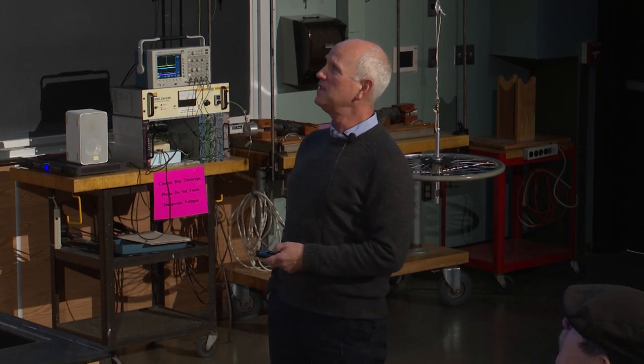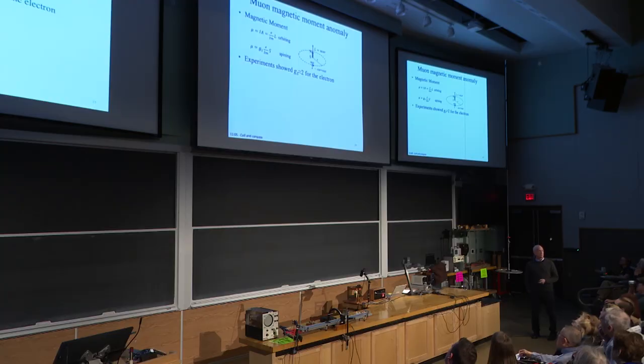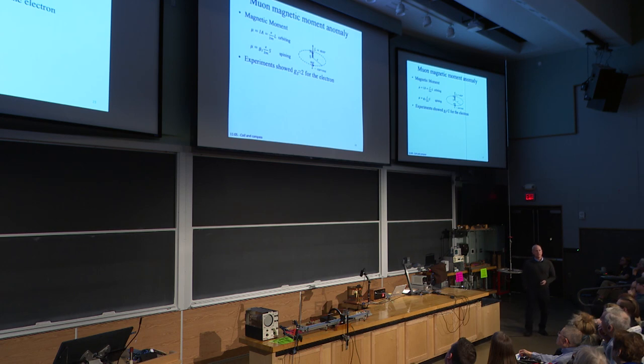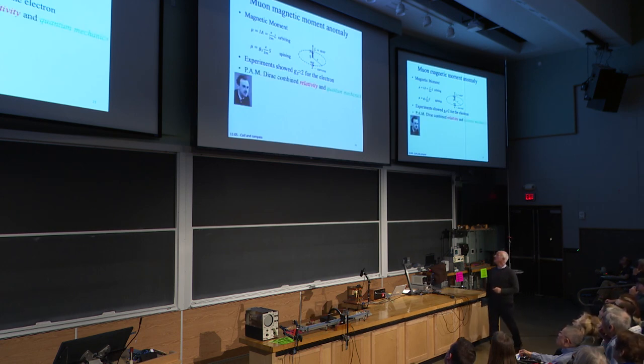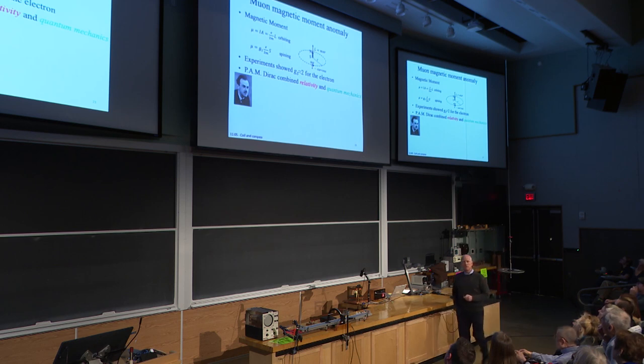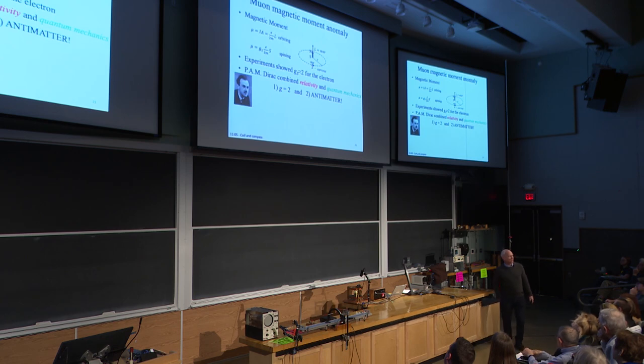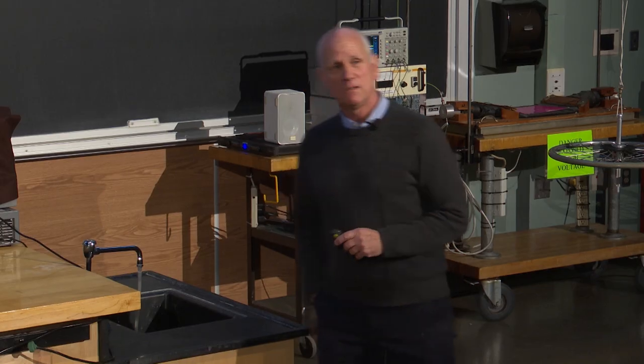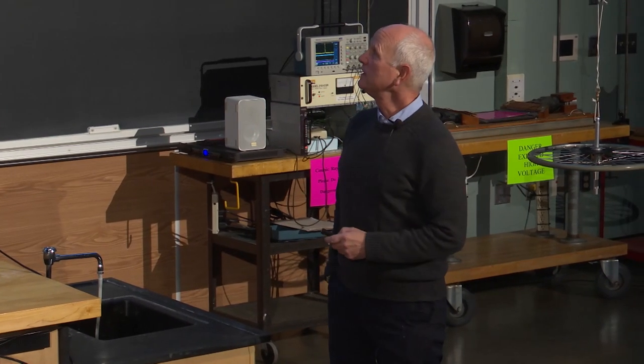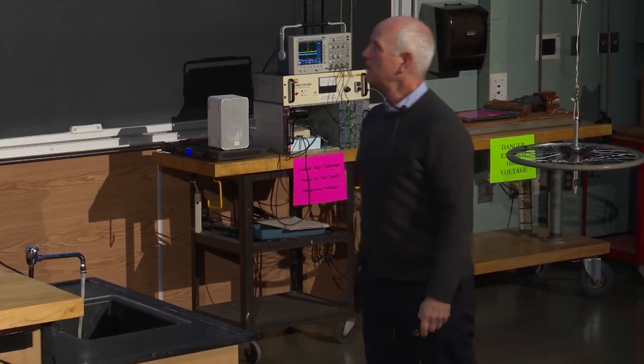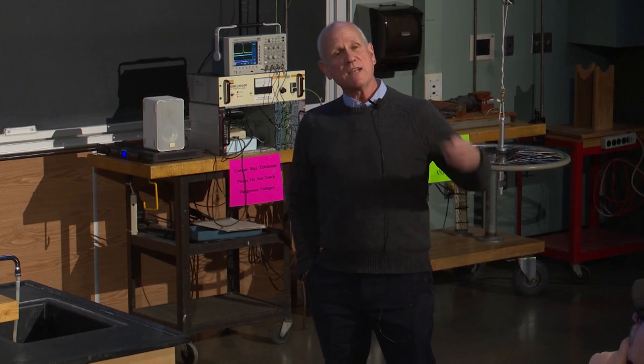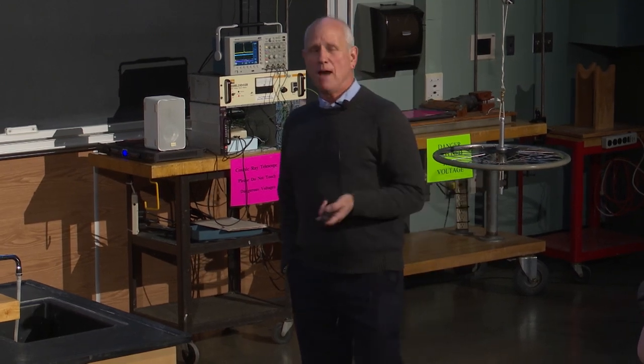And since we know the angular momentum of the muon is the spin of the muon, you can plug that in, and it turns out it doesn't work. It's off by a factor of two, so we put this extra factor G in front. And experiments showed that G was about two. Now Dirac, whose theory predicted antimatter by combining quantum mechanics and relativity, also predicted that G would be exactly two, not one, which it is for an orbiting particle. So that was a triumph. Dirac did also win a Nobel Prize.